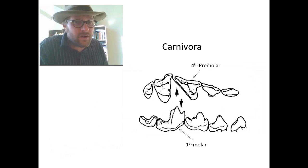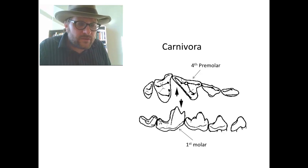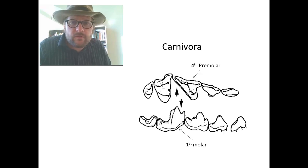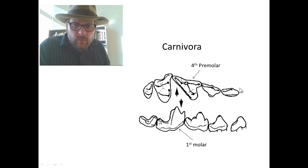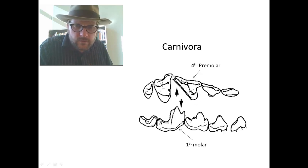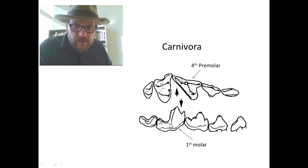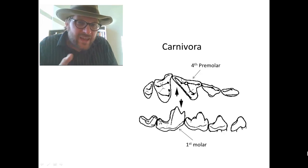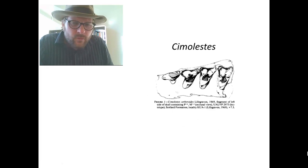Now we talk about the Carnivora as the proper Carnivora group. We're talking about groups of mammals that have a carnassial pairing between the upper fourth premolar and the first lower molar. The upper fourth premolar in true Carnivores is going to be a diagonal, pyramid-type shape, with a long cutting blade that fits on the front end of the molar below, with a long scissor-like facet that they could slide up and down against, providing an excellent cutting surface.